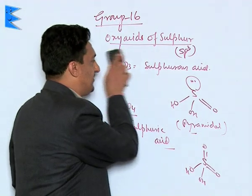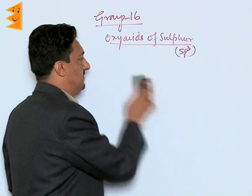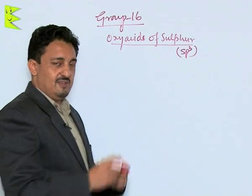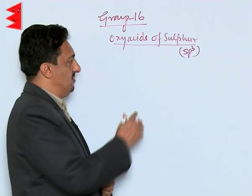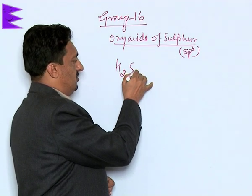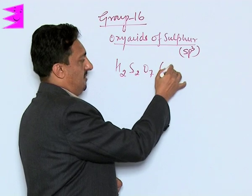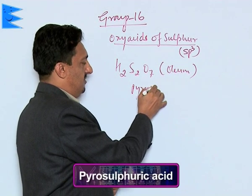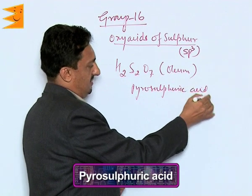When two molecules of H2SO4 are heated together, they combine with the loss of one water molecule, with both units joined through a common oxygen atom, forming H2S2O7. This is commonly called oleum and is also known as pyrosulphuric acid.